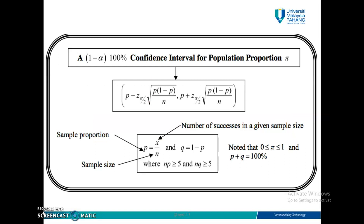This is the only formula we use to find the Confidence Interval for one population proportion. If you look here, this is your P — it's a sample proportion. What is P? X over N. So X is the number of successes and N is the sample size. Z alpha over 2 is a value which you get from the statistical table, and this is the standard deviation for the distribution.